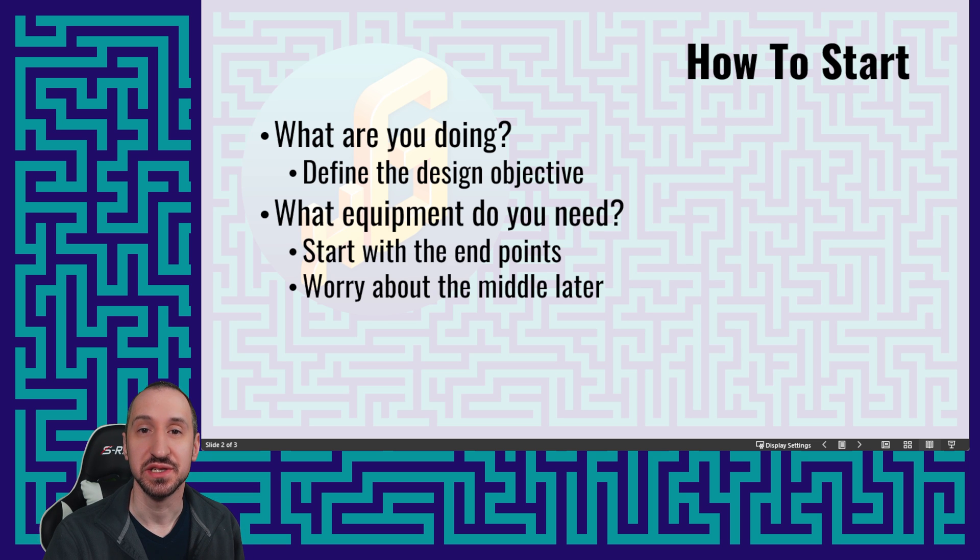The next thing is what equipment do you need to achieve that objective? I find it best to start with the endpoints. So what's coming in, how are you getting your signal? Let's say it's a camera and a microphone - those would be the sources of your signal. And then where's it going? Let's say it's going to a recorder, so that would be your endpoint. At that point it becomes a file you can use later. Definitely start with the endpoints - we'll worry about the middle later when we're creating the lines and relationships between equipment.